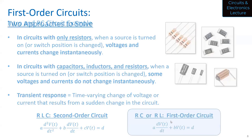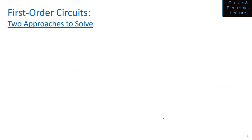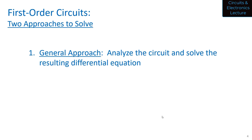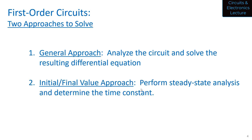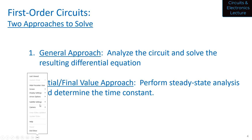There are two ways to solve a first-order circuit and I will show you both. The first way is what I call the general approach — you analyze the circuit using KVL, KCL, voltage division, Ohm's law, create a first-order differential equation, and solve it. The second approach I will show you later is the initial and final value approach — you perform steady-state analysis, determine the time constant, and plug numbers into a known form of the solution. Both approaches are valid and useful.